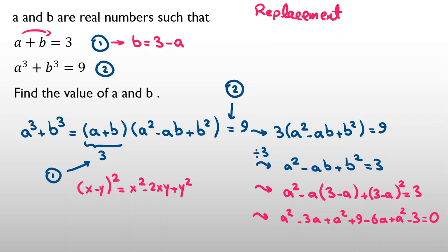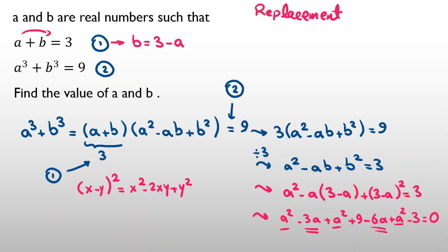So here we have a squared, a squared, a squared. I can write, we have 3a squared. Then we have negative 3a, negative 6a, negative 9a.